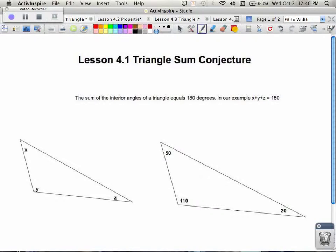In section 4.1, we're going to talk about triangles and more specifically the triangle sum conjecture. That is that the sum of the interior or inside angles of a triangle equals 180 degrees. Down below you'll notice that